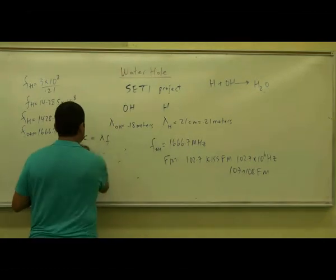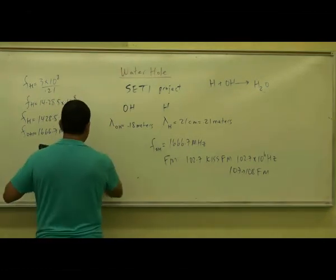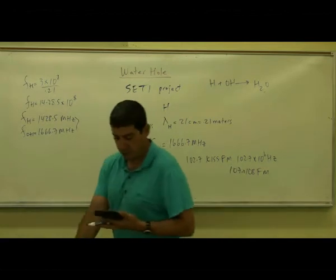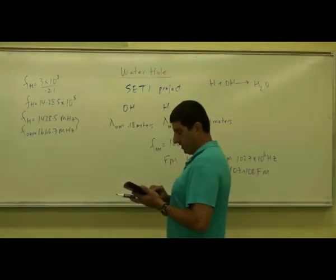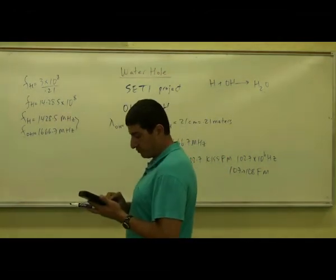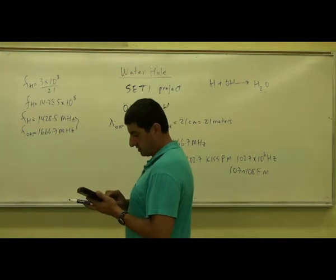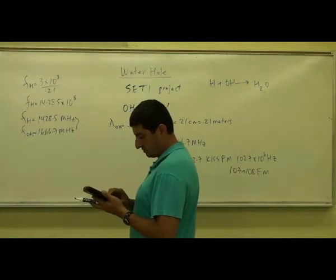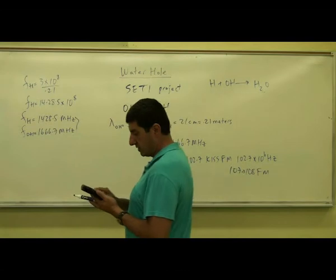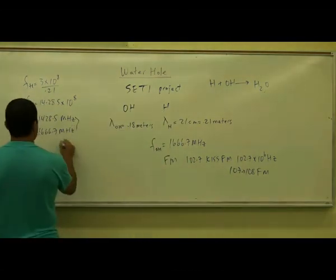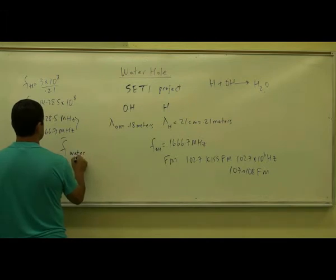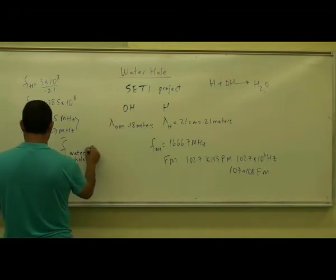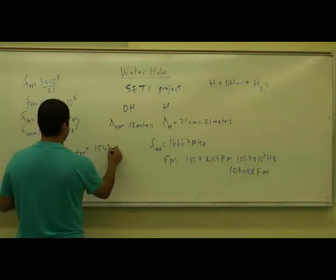you get roughly the middle region of the waterhole. So if you average up 1428.5 plus 1666.7 divided by 2, you get 1547, F average waterhole. 1547 FM.